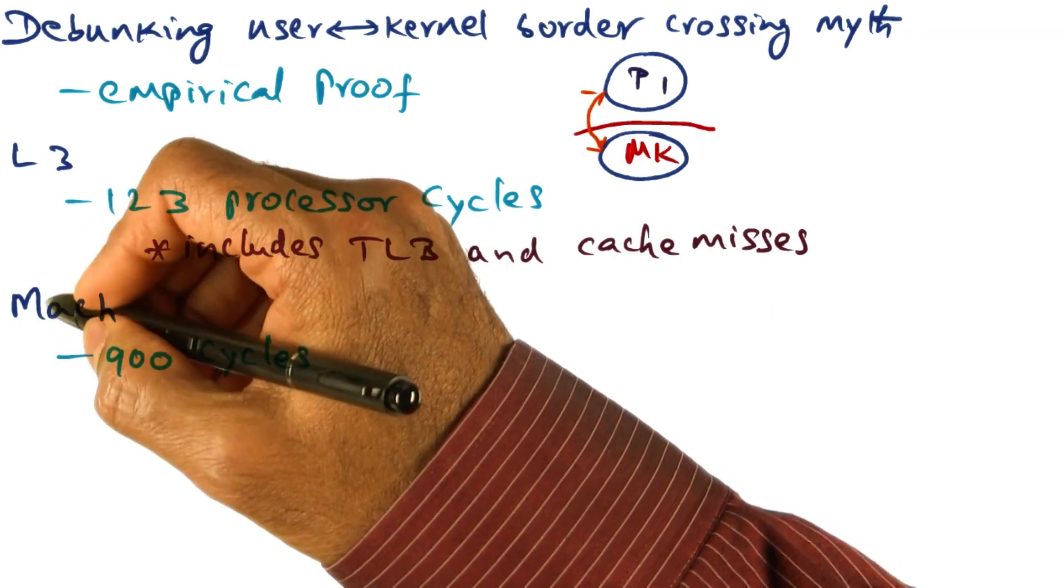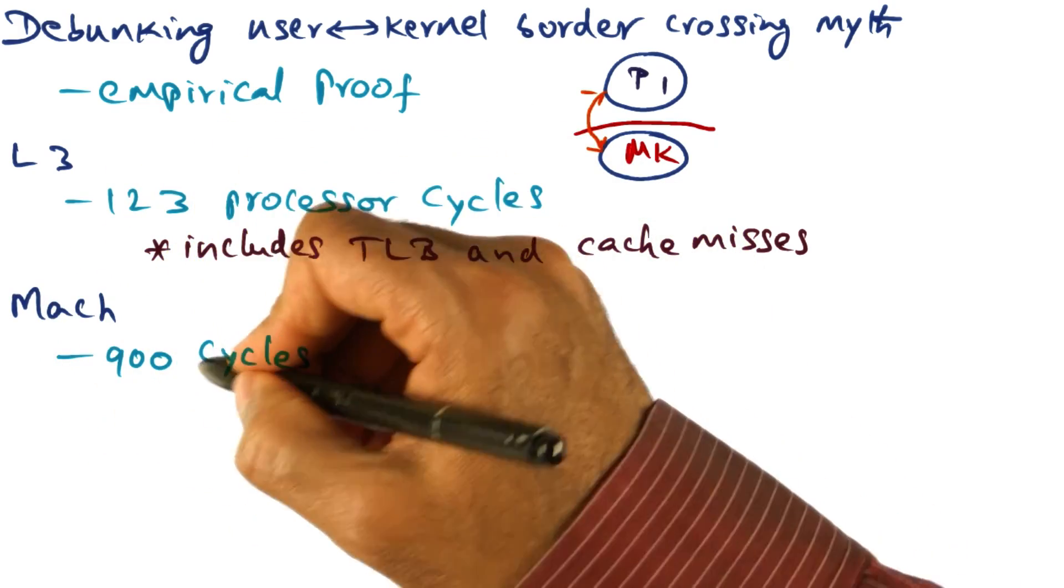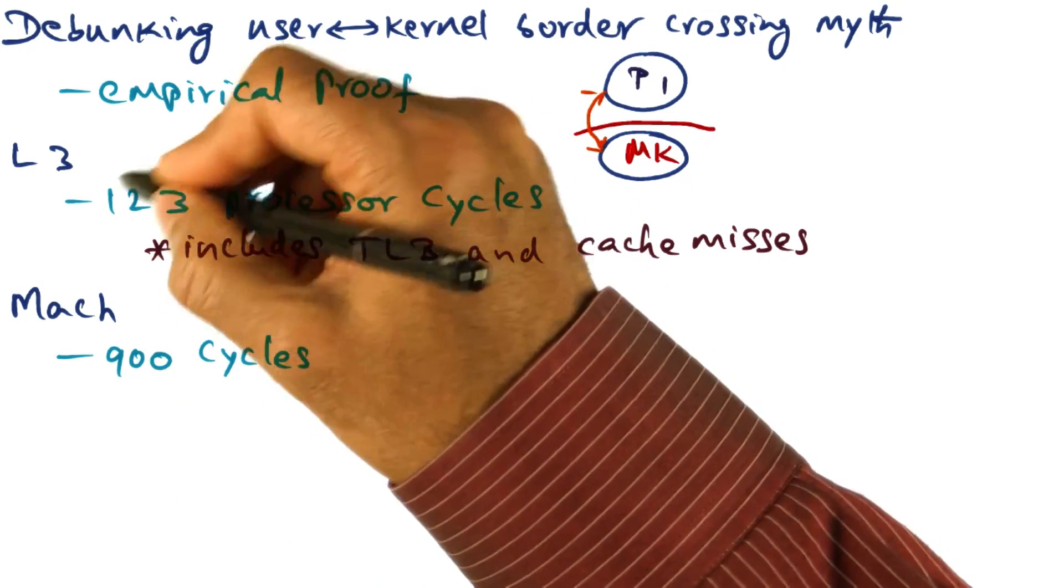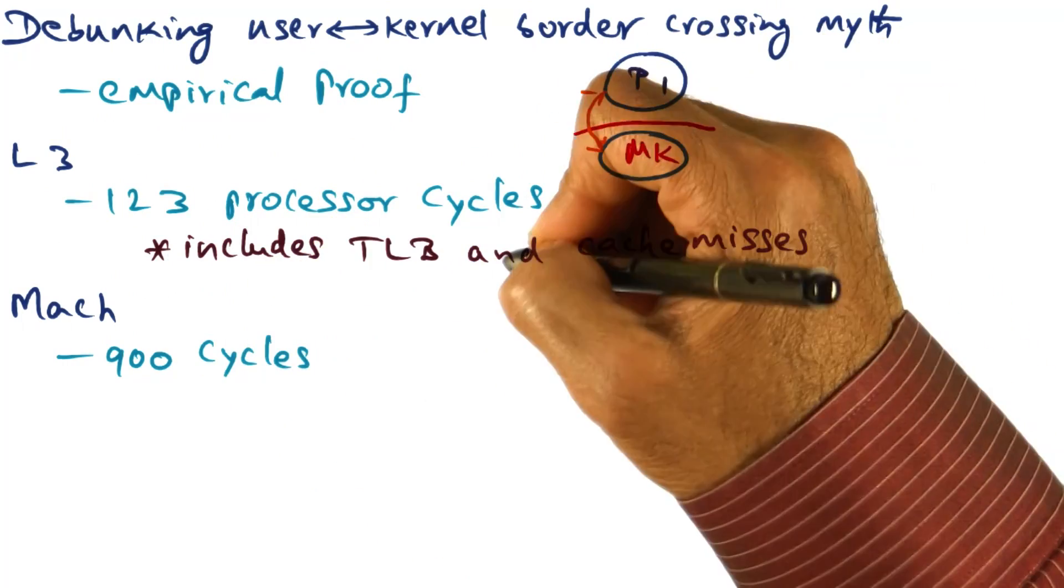It turns out that CMU's mock operating system on the same hardware takes 900 cycles as opposed to the 123 cycles taken by L3 for border crossing.